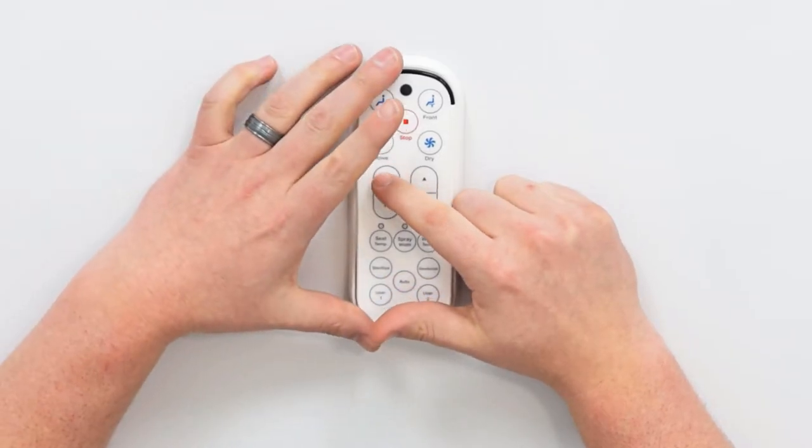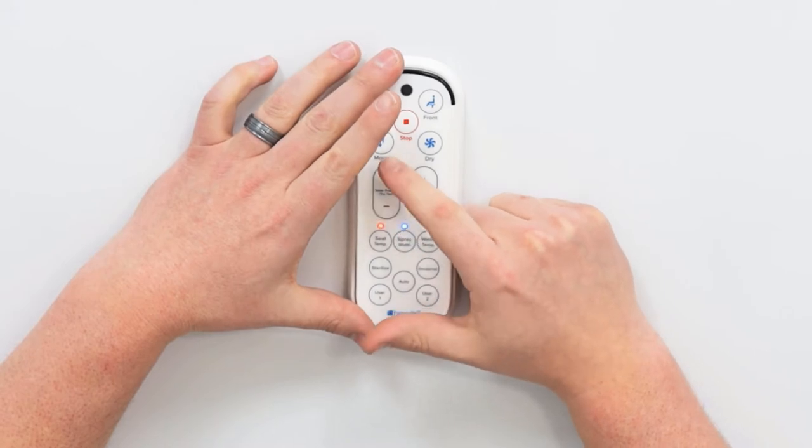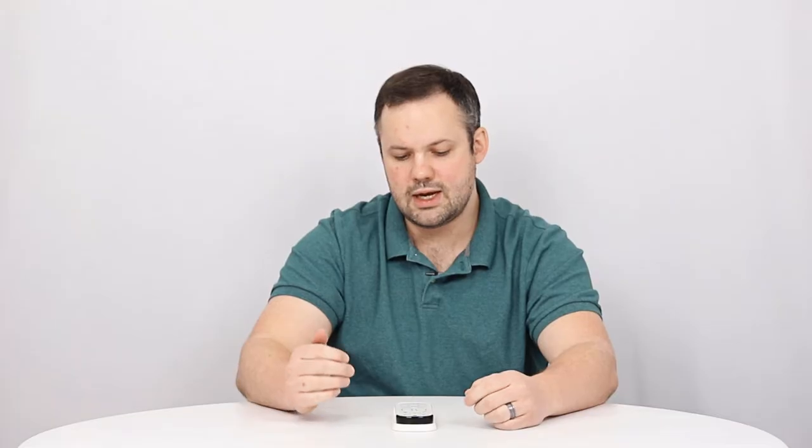For the pressure, we're going to use the plus and the minus buttons here on the remote. These buttons should be pressed while the wash is running.